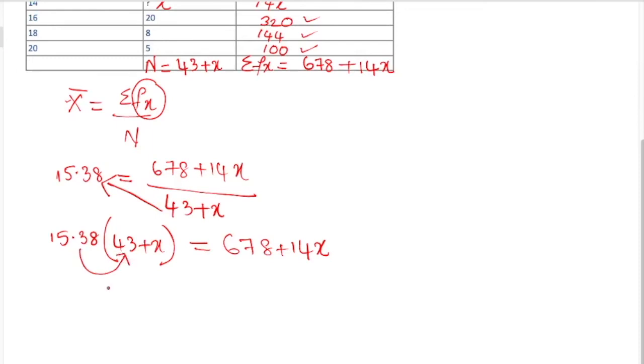15.38 times 43 equals 661.34. You can use a calculator; the examiner is going to allow calculators at your degree level. If you are in 10th class or 12th level they will not allow it, you have to do it yourself. Take a rough note and start multiplying. So 661.34 plus 15.38x equals 678 plus 14x.